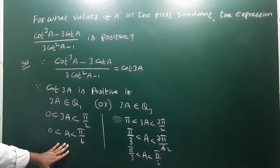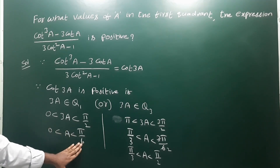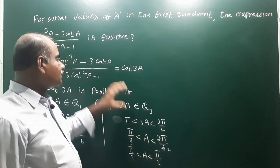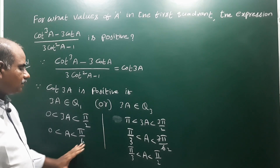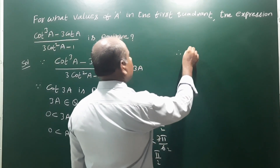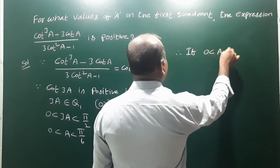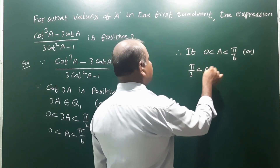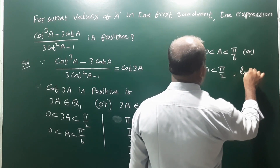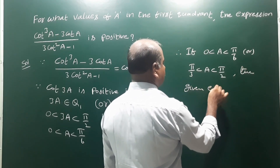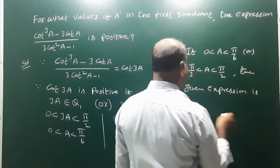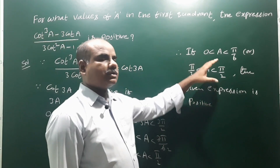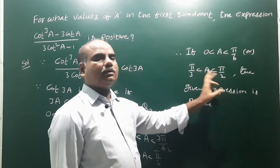So we have two cases. The first case: if 'a' lies between 0 and π/6 (that means 0 to 30 degrees), this expression is positive. The second case: if 'a' lies between 60 to 90 degrees (π/3 to π/2), this expression is positive. Therefore, if 0 < a < π/6 or π/3 < a < π/2, the given expression is positive. That is the answer.